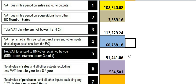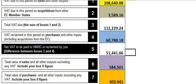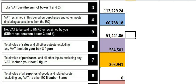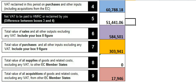Box five is just the difference between boxes three and four — hence no colour. Now, remember: skip boxes six and seven and go straight down to eight and nine. The reason for that is because you have to include certain figures in boxes six and seven.